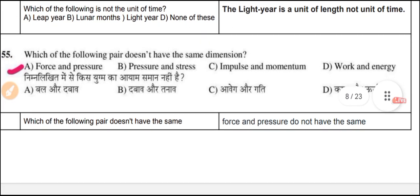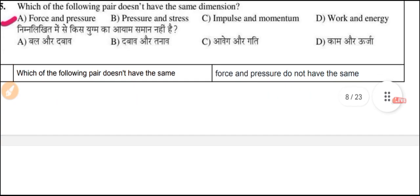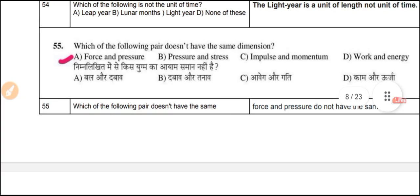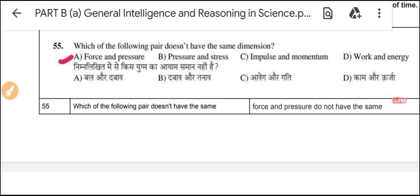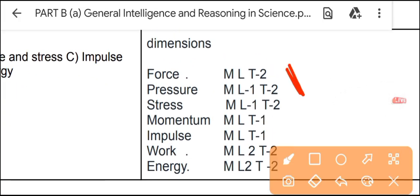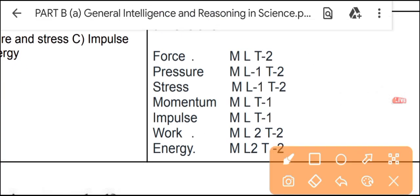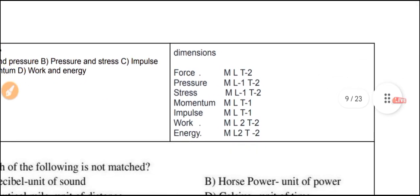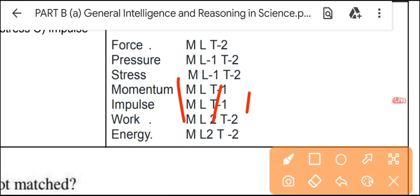Question 55: Which pair does not have the same dimensions? Force and pressure do not have the same dimensions. Work, energy, momentum, and pressure/stress have the same dimensions among themselves, but force and pressure have different dimensions. Here M represents mass, and units of length and time apply.